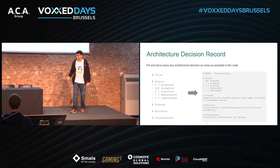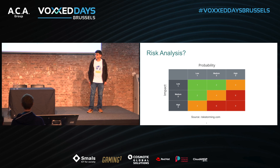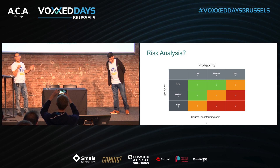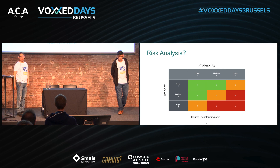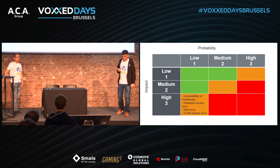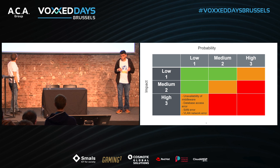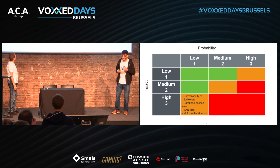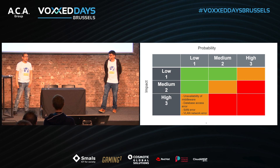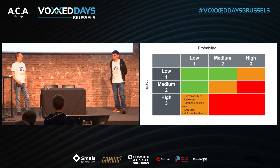Now that we've defined the hosting strategy, it's a good time to do a first iteration of the risk analysis. I recommend formalizing a simple risk matrix — you know, where you prioritize and analyze risks based on the probability of occurrence and the impact when they occur. The idea is to mitigate risks and move most of them into the green zone. Based on former projects, we can start filling this matrix with known risks such as unavailability of middlewares, public vs. on-premise deployment decisions, database access errors, and network incidents.